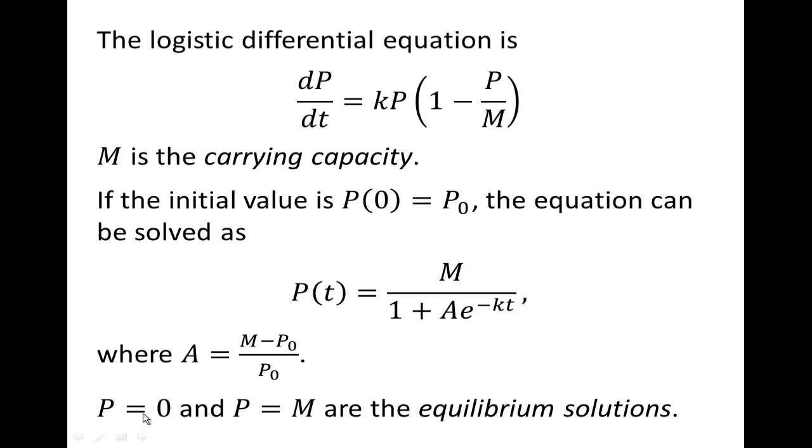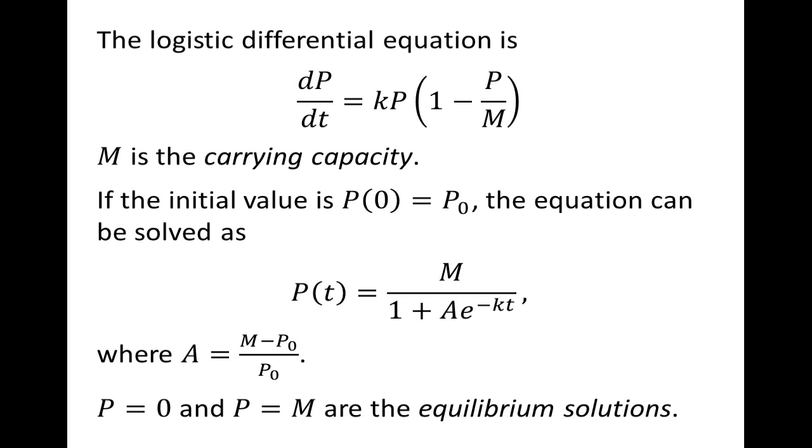A couple of interesting things here. If p is equal to 0, notice that this factor would be 0, the derivative would be 0, and if p is equal to m, we get m divided by m, we're going to end up with 0 here as a factor. So in both cases, we'll end up with a derivative equal to 0, which means that these are equilibrium solutions. The population will remain constant. The population's rate of change is 0.